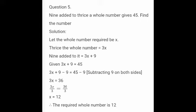First of all, we make the expression for the statement and also find out the solution. Let us assume the whole number be x. Also given, thrice the whole number — thrice means 3 times a whole number. So, 3x. 9 added to it, that means 3x plus 9.